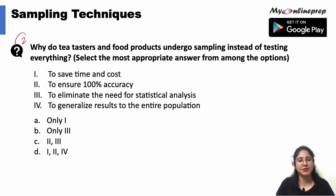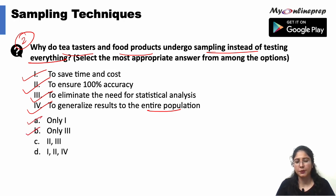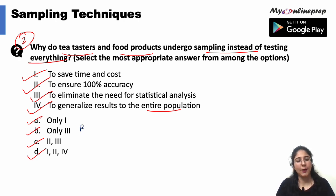The second question: why do tea tasters and food products undergo sampling instead of testing everything? The first option is to save time and cost, second is to ensure 100% accuracy, third is to eliminate the need for statistical analysis, and the fourth is to generalize the results to the entire population. The options are only one, only two, both two and three, or first, second and fourth are correct. The correct option would be option B, and we will have a thorough analysis of the same.